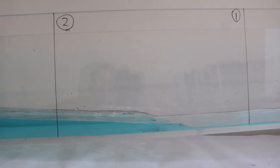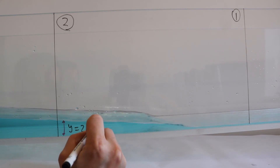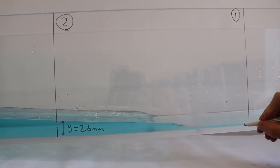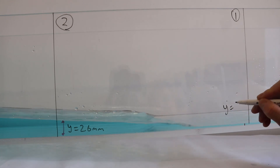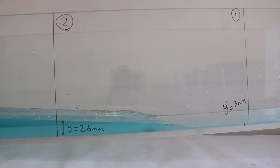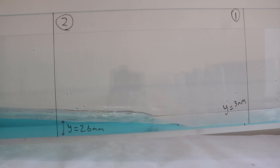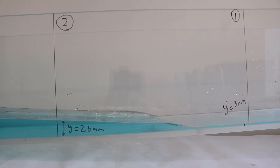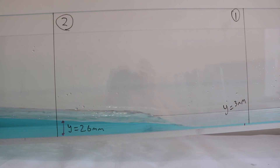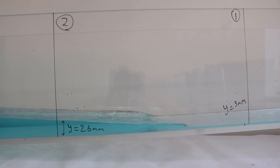Here we can clearly see that the depth is not the same along the length of this flow. It is worth noting, however, that this is still a steady flow. Despite the fact that the depth is changing with distance along this flow, none of the depths are changing significantly with time. If you pick any particular point in this flow, you can see that the depth at that point is remaining relatively constant with time. So this is a steady, non-uniform flow.